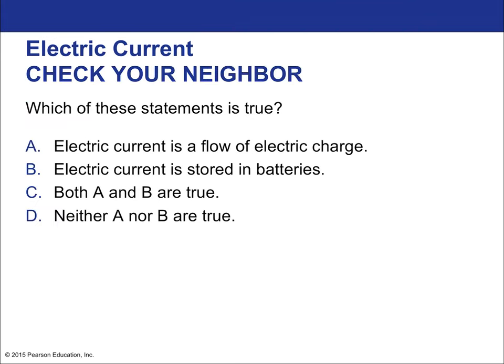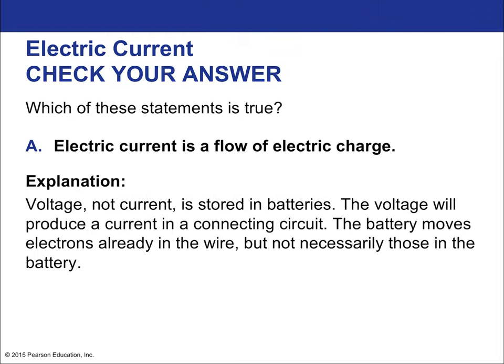Which of these statements is true? Electrical current is the flow of electrical charge, or electrical current is stored in batteries? Only the first one is true, because you can't store current. Current is the movement of charge — there's no storing movement, just like you can't store velocity.